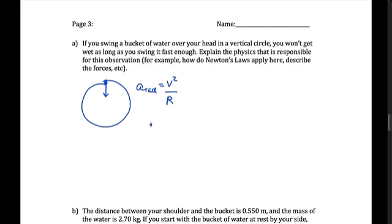What I would expect is just a couple of sentences that explain that the radial acceleration, the radial component of the acceleration points down. It's equal to v squared over r. And this has to be greater than or equal to the acceleration due to gravity.